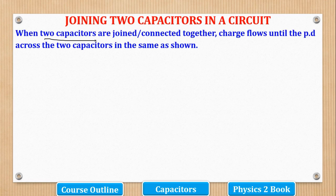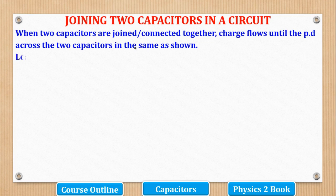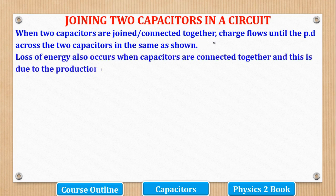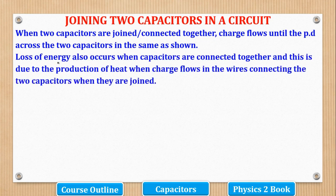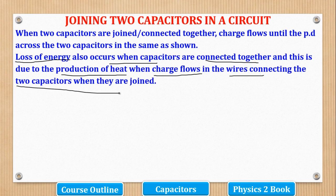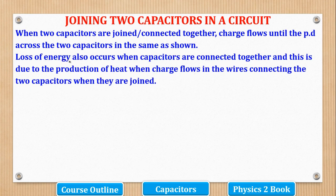When two capacitors are joined together, charge flows until the PD across the two capacitors is the same. As this charge is flowing, it will generate some heat, and that heat accounts for the loss of energy. This is why we say that loss of energy occurs when capacitors are connected together — it is due to the production of heat when charge flows in the wires connecting the two capacitors.